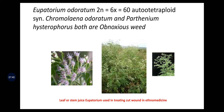Eupatorium odoratum is hexaploid with chromosome number 2n = 60. It is also an autotetraploid. Another botanical name for this is Chromolaena odorata or Parthenium hysterophorus. Both are obnoxious weeds. Leaf or stem juice of Eupatorium is used for treating cut wounds in ethno-medicine.